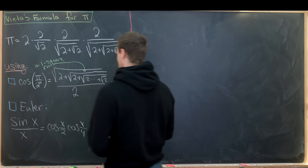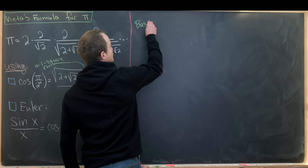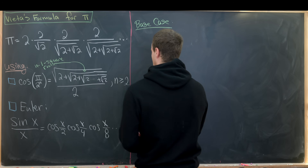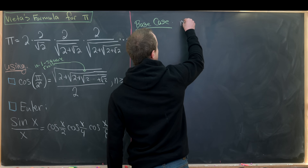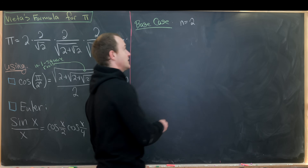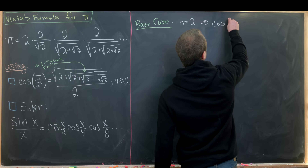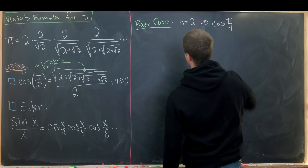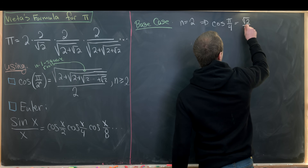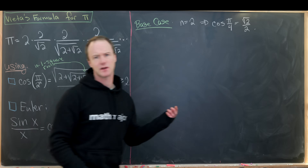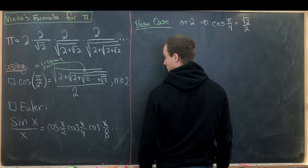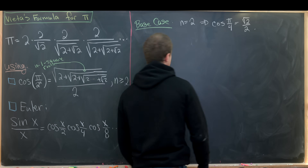Let's prove the first result using induction, which means we need a base case. Since this starts working when n equals 2, we'll take n = 2 as our base case. That's just a trivial calculation: cosine of π over 4 — which is cosine of π over 2^2 — equals square root of 2 over 2. That's a well-known value, and we have a single square root here, consistent with the formula.